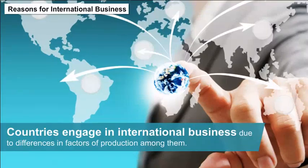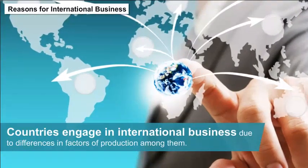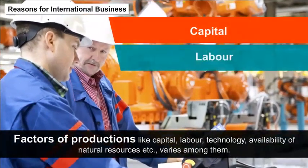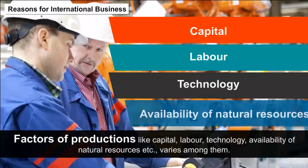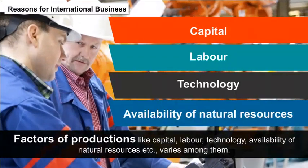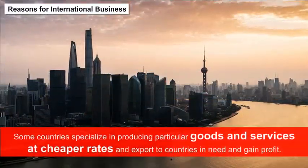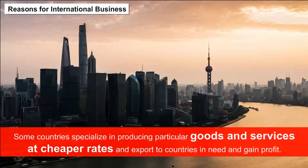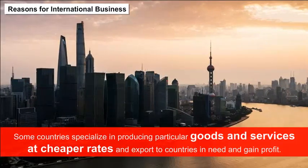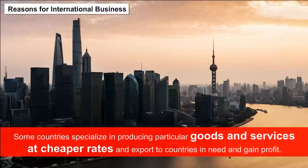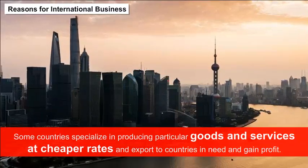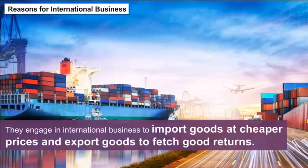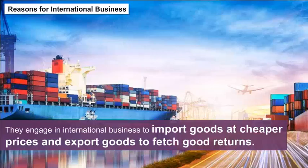Reasons for International Business: Countries engage in international business due to differences in factors of production among them. Factors of production like capital, labor, technology, and availability of natural resources vary among them. Some countries specialize in producing particular goods and services at cheaper rates and export to countries in need to gain profit. Companies work in the same way — they engage in international business to import goods at cheaper prices and export goods to fetch good returns.